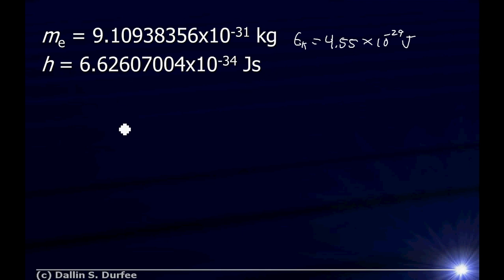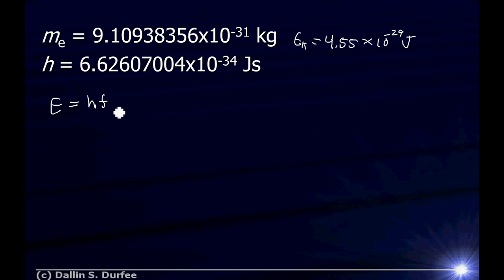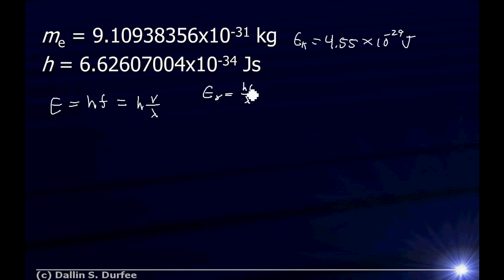We'll also need the mass of the electron and Planck's constant to work this problem. Before I work this problem correctly, I'm going to try a way you might think of doing it and show you why you can't. You might say, I know the energy, and I've got this energy relationship for quantum particles: the energy is Planck's constant times frequency. You might use this to find the frequency of the particle. But we wanted the wavelength, not the frequency. The frequency is just the velocity of the wave divided by the wavelength. And some of you will remember that for photons, the energy is HC over lambda — but that's for a photon, not for an electron, so we can't use that.